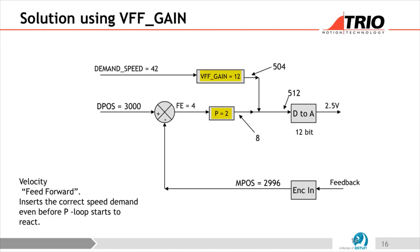VFF gain works because in our software we know what speed we want to do. We multiply that speed by some factor to output the correct voltage for that speed, even before the P loop tries to correct it. Effectively, VFF provides the speed voltage directly, and P gain just mops up small position differences. VFF gain is quite easy to set up — you can even calculate it. It's called velocity feed forward.